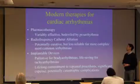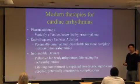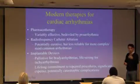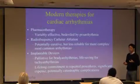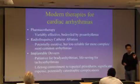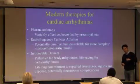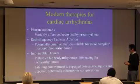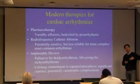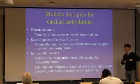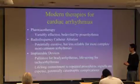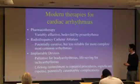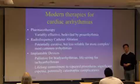What are the modern therapies for cardiac rhythm-associated diseases? There are three different approaches. Drug therapy is the first line of defense and it's variably effective. The biggest problem with drug therapy is that it addresses one symptom and creates another problem — it's bedeviled by proarrhythmic events. For ectopic beats in the ventricular myocardium, you can go in and burn it using radiofrequency catheter ablation. It's potentially curative in ventricular arrhythmias, but less reliable for more complex and common arrhythmias such as atrial fibrillation.